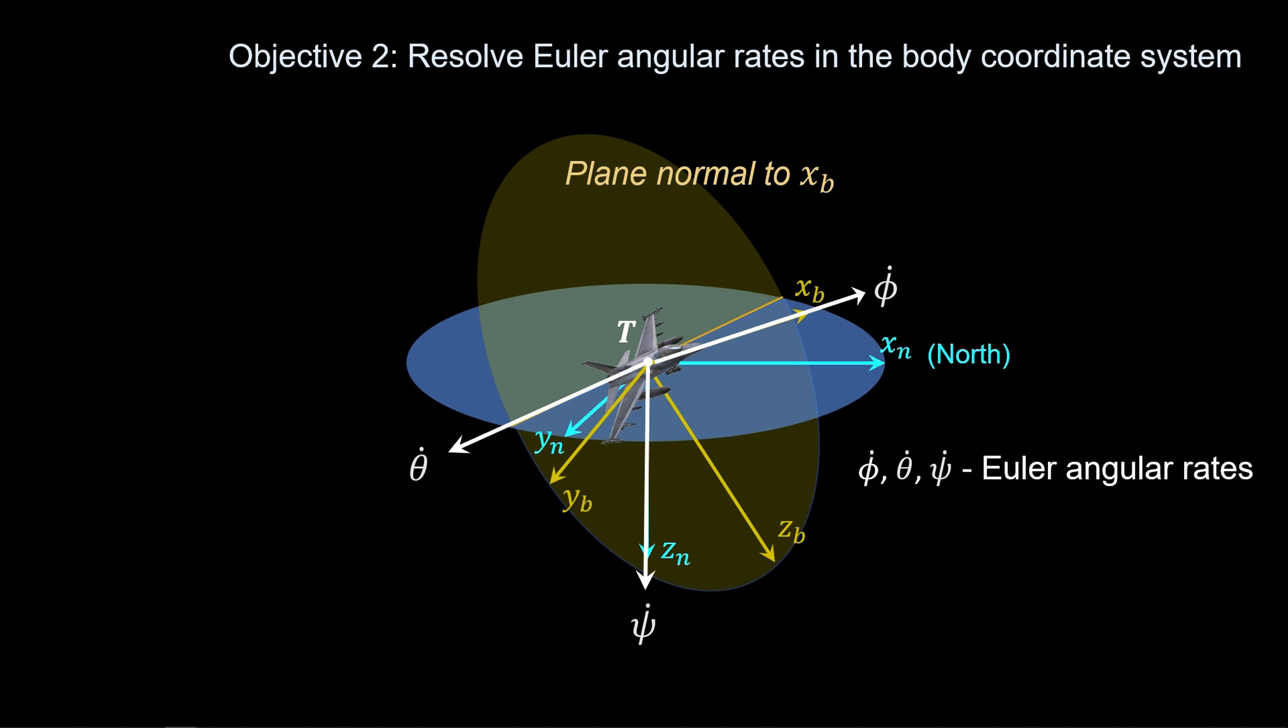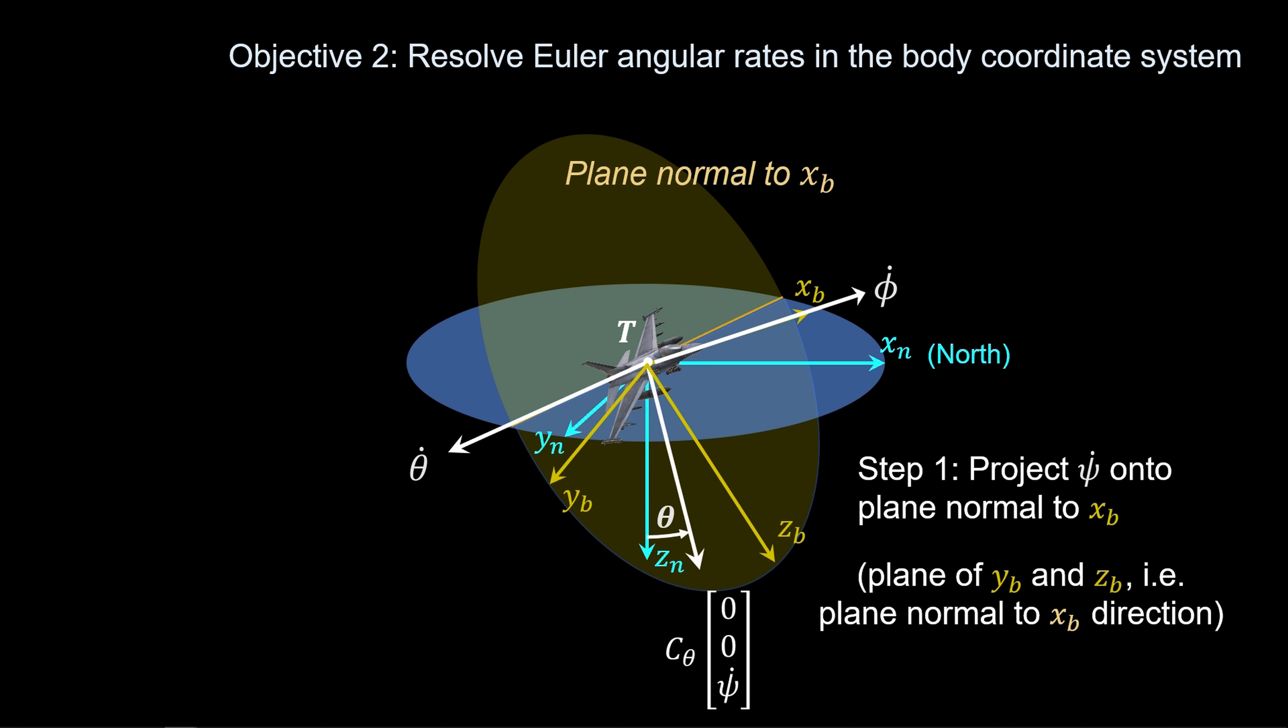Note the Euler angular rates are resolved in non-orthogonal directions, so we can't simply apply the DCM for NED to body, but we can operate on the phi-theta-psi-dot vectors to align them with each body coordinate direction. First, we will rotate Psi-dot onto the body YZ plane through the pitch angle theta. To do this, we apply the planar rotation about theta, C-theta, to Psi-dot.